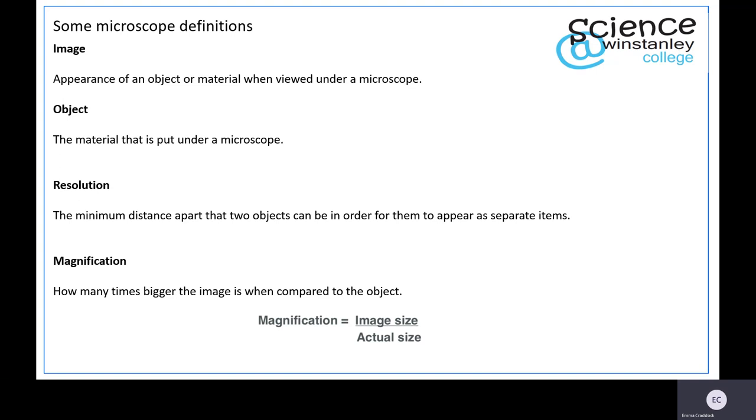The object is the material that you have put under a microscope. For example, if you're looking at cheek cells, that object will be a cheek cell because that is the material you have put under the microscope.